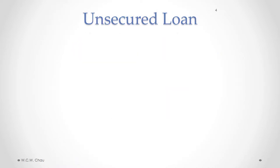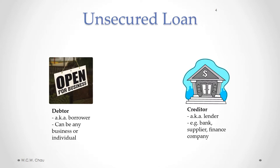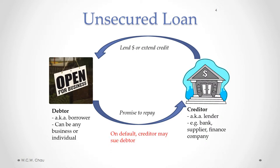So here's a more general description of an unsecured loan. We have a debtor — also known as the borrower, though we'll consistently use the term debtor. A debtor can be any business or individual. The creditor, also known as the lender, can be a bank, a supplier selling to you on credit, or a finance company. With an unsecured loan, money is lent or credit is extended from the creditor to the debtor, and the debtor makes a promise to repay. On default, the creditor may sue the debtor to try to recover the money loaned.